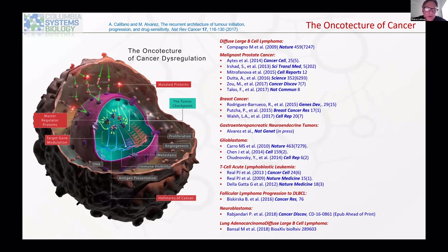Our methodological approach in the lab for many years has been to recognize that the transcriptional state of the cell, which identifies its phenotype, is implemented by a very small number of proteins that we call master regulators. These are downstream of major signals the cell sees either from the environment or from endogenous perturbations, including viral infection, or from exogenous perturbations such as signals from the microenvironment or distal signals. There is a consolidation of all these signaling processes into the activation or inactivation of this small number of master regulator proteins.